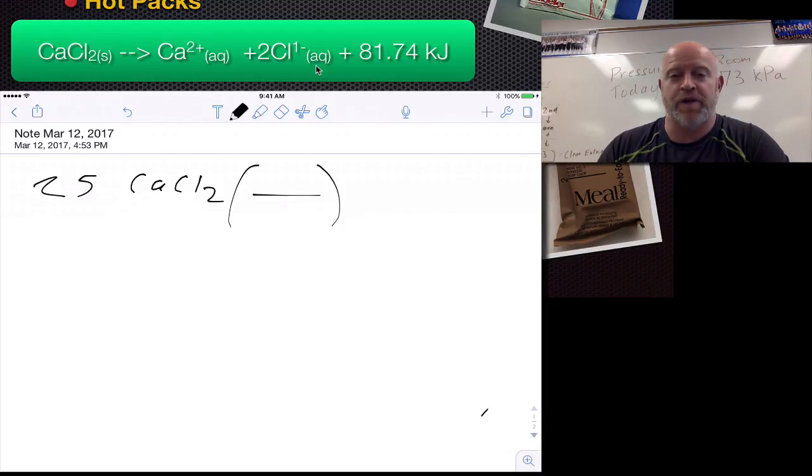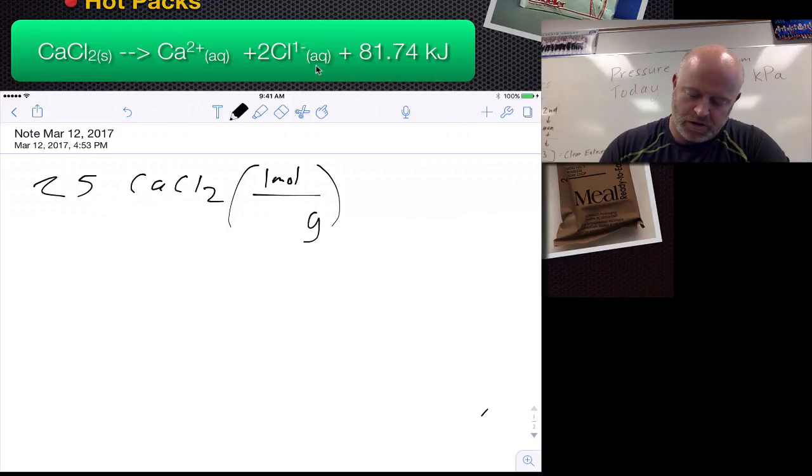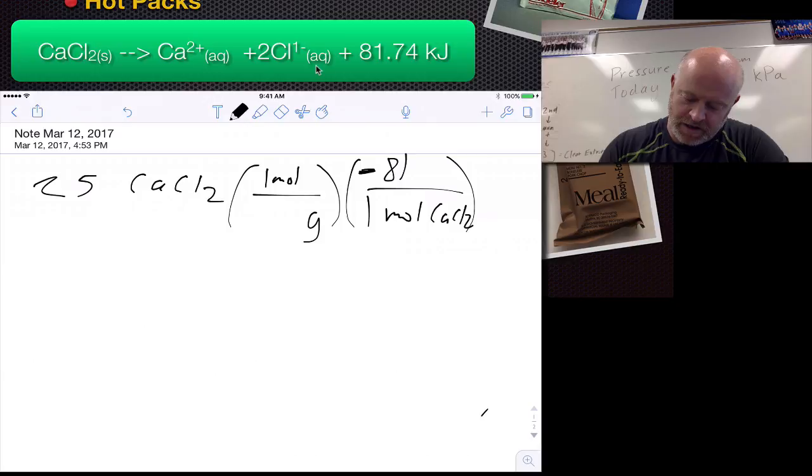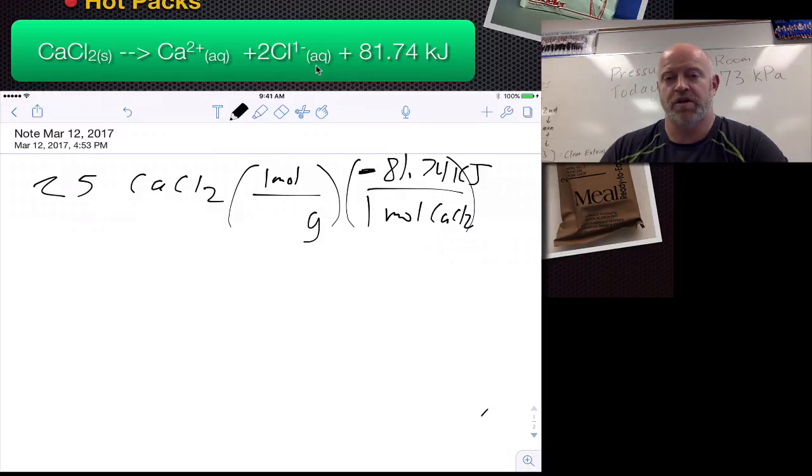If we have 25 grams of calcium chloride, we know that we need a ratio here, a mole ratio. We need to know our grams of calcium chloride for every one mole of calcium chloride. Once we know that, we know in this process that for every one mole of calcium chloride that we release, it's negative 81.74 kilojoules of energy. The only unknown thing there is our molar mass of calcium chloride.